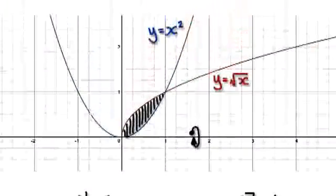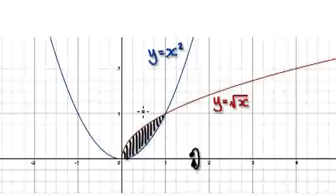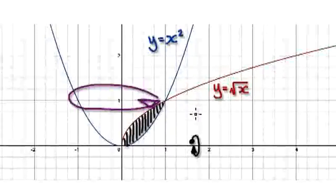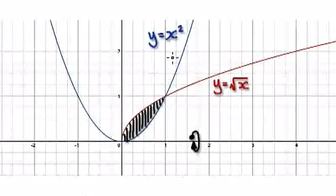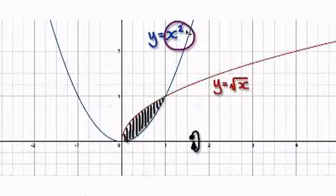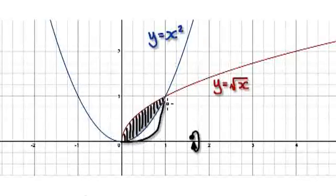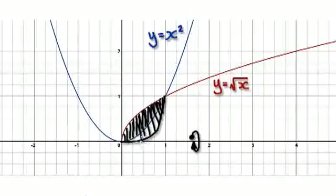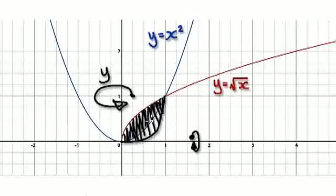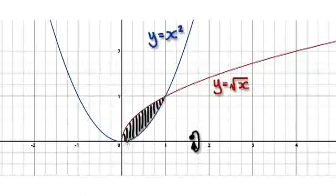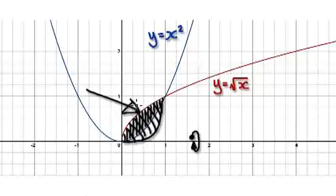So as it turns out, it doesn't matter if you rotate this along the y-axis or along the x-axis — it doesn't really matter. But the question you really should ask yourself is: suppose this blue line is not a perfect x squared — suppose the blue line is like this instead. Now, will it make a difference? If you were to rotate this along the y-axis versus the x-axis, which would give a bigger volume? This is something that you have to investigate for yourself.